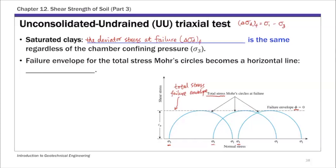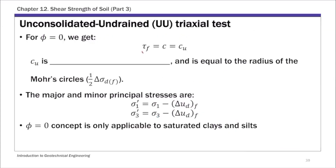Because the Mohr circles are the same size, the radius is the same. In the Mohr-Coulomb failure function, the term σ times tan φ — where φ is the undrained friction angle — is zero, so that term vanishes. Therefore τ_f equals the cohesion value c, and this failure envelope becomes a horizontal line. This is called the φ equals zero condition. So τ_f equals c, and this c we call c_u — the undrained shear strength. The undrained shear strength c_u is basically one-half times the deviator stress at failure, which is the radius of the Mohr circle.